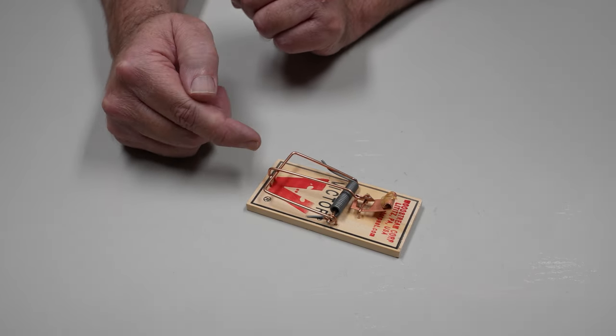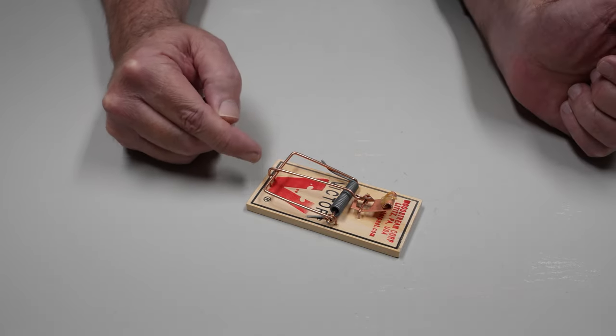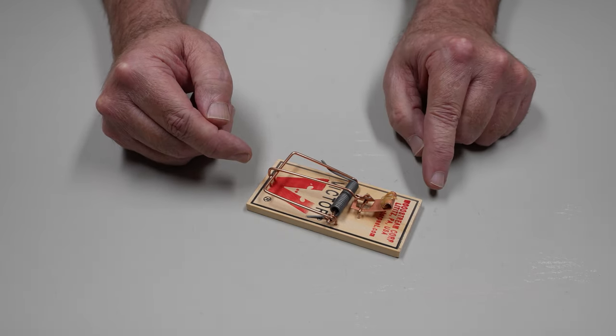Now the trap is set. When they push the bait pedal down, it's going to release this center arm and the spring is going to snap this bar shut.